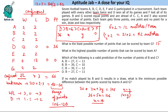For the second question — the highest possible number of points scored by team A — we find the maximum value of Y. We use the maximum total of 126: 36 + 5X = 126, giving X = 18. But since X > Y, Y must be less than 18, so the maximum possible value of Y is 17.